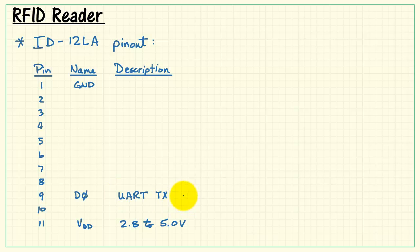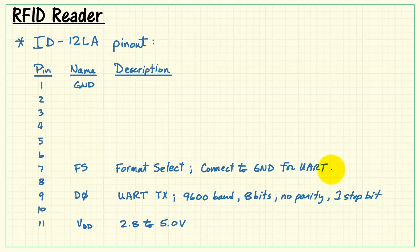Pin 9, designated as D0 signal name, that's our UART transmitter output. It uses 9600 baud, 8 bits, no parity, and 1 stop bit. Format select, that's number 7. We need to have format select connected to ground to make a UART style output. This reader can also emulate a magnetic card swipe reader. It's important that we specify the UART version, though.